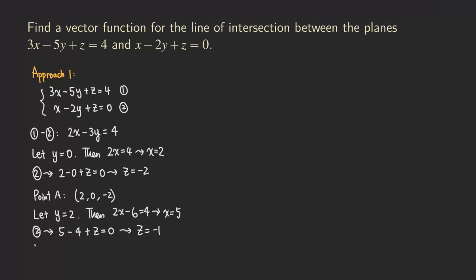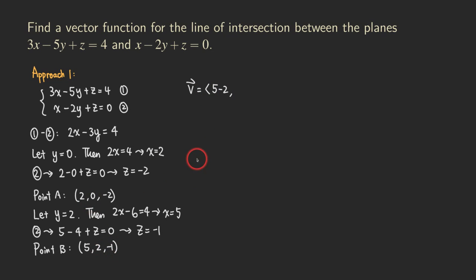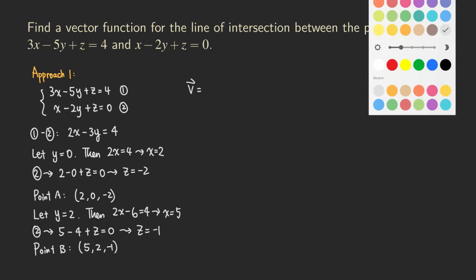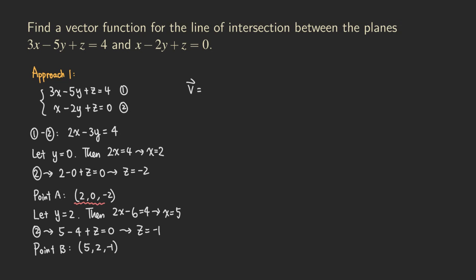So the other point — point B — is (5, 2, −1). Once we get those two points, we can find the direction vector by subtracting one point from the other.